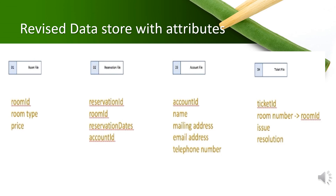Let's revise the attributes inside each data store. The attribute availability in the room entity is removed and will be replaced with a new attribute named reservation date inside the reservation entity. This is because keeping availability in a form of description is less effective compared to having a specific date for a particular reservation. The other attributes remain unchanged.